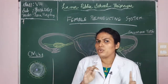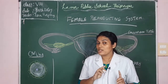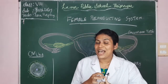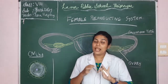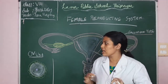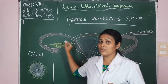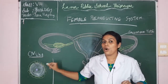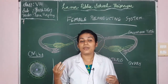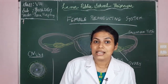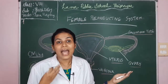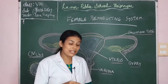Do you remember the function of the testis? The function of testis is to produce sperms as the male gamete as well as a hormone called testosterone. Similarly, the function of the ovary is to produce the ovum — the female gamete — and also to secrete female hormones. Like testosterone in males, females produce hormones called progesterone and estrogen.